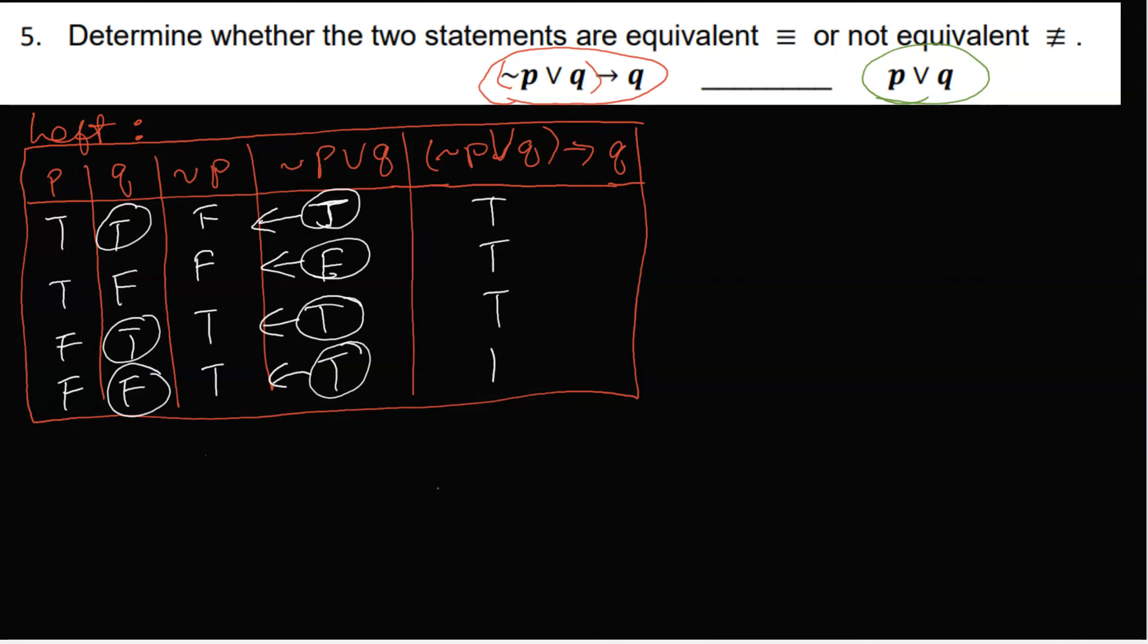Now on the right-hand side, if I build the same corresponding truth values P, Q, and if I list them the same way: true true, true false, false true, false false.